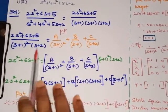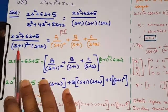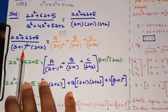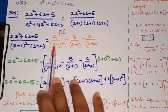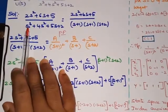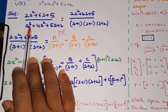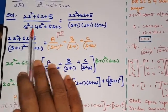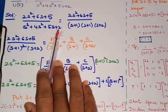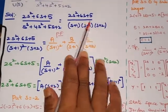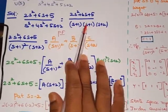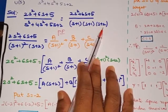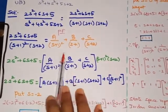Remember how to represent partial fractions when variables are repeated. Here (s+1)² means repeated variables, so the partial fraction is represented accordingly. Also note there are three terms, denoting order 3 — the system has three poles: s = -1 is one pole, s = -1 is another pole, and s = -2 is one pole.